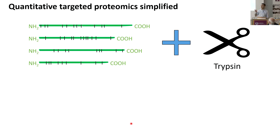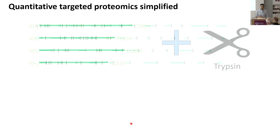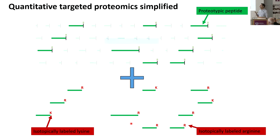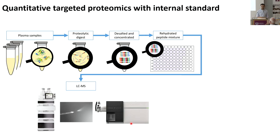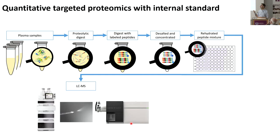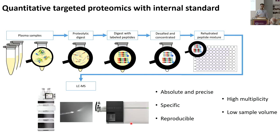The approach is very simple. You have your protein, and then you digest it, for example with trypsin, and then you get your peptides. Some of these peptides are the proteotypic peptides, and this is what you want to target. If you want to add heavy-labeled peptides with a known amount, you can do relative quantification, and from the unknown amount of the endogenous, you can infer how much of that peptide is in your sample — and with that, how much of your target protein is in the sample. On the mass spec side, it's just adding one single step: adding the internal standard, and you will get absolute and precise, specific, reproducible measurement.